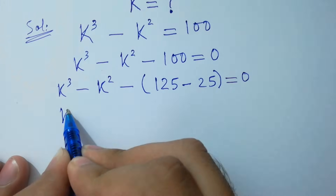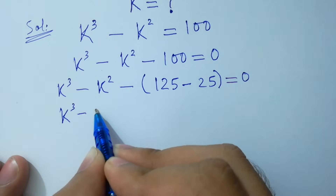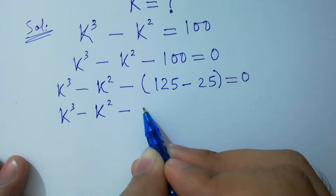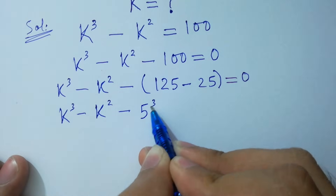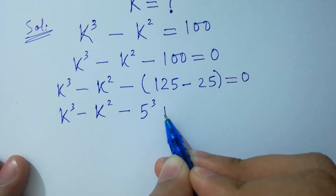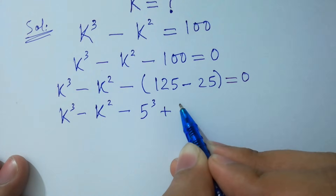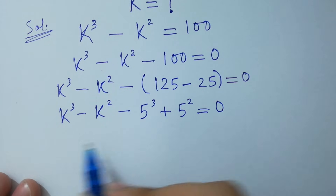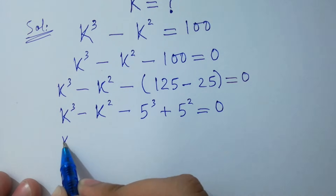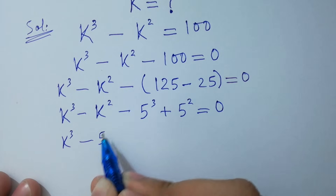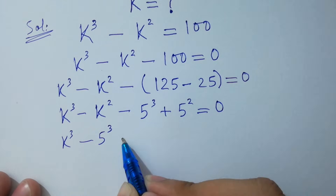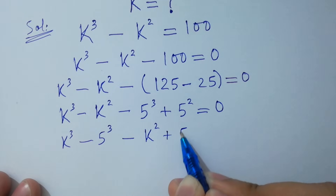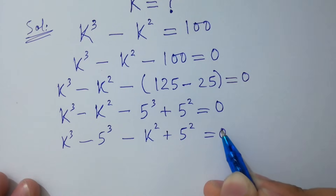So we rewrite: k cubed minus k squared minus 125 plus 25 equals 0, which becomes k cubed minus 5 cubed minus k squared plus 5 squared equals 0.